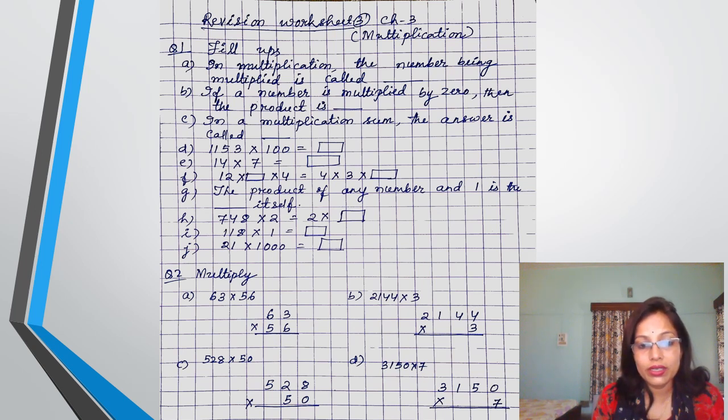1 is multiplied to any number. So what you will get? Next is 21 multiplied by 1000 is equal to thus. So here 1000 is multiplied. How many zeros are there? That number of zeros only you have to write at the right side of the number 21.